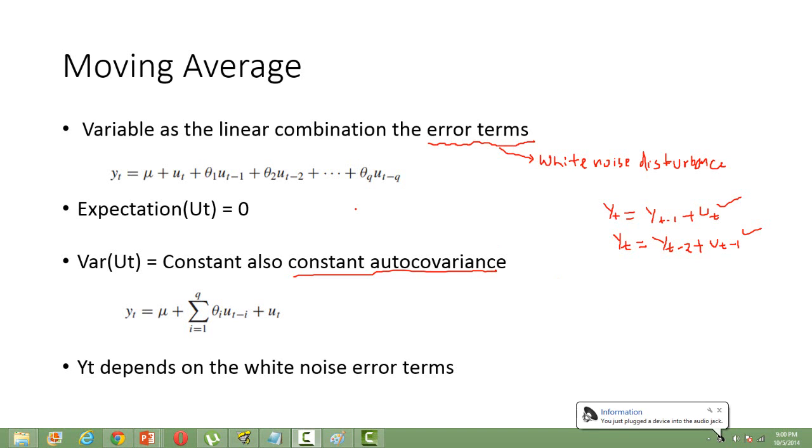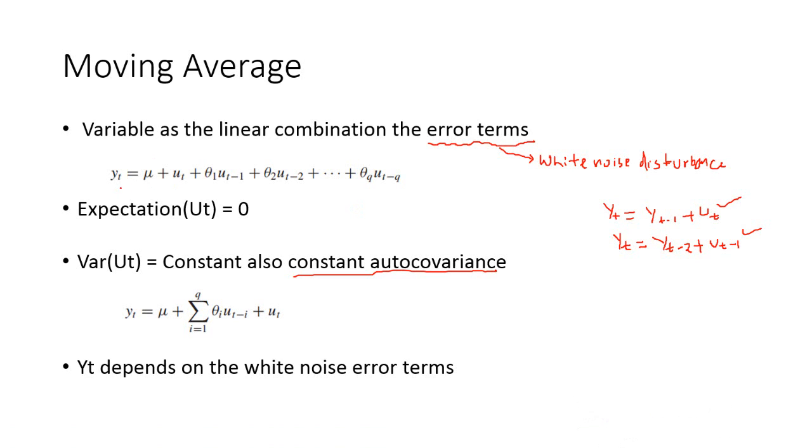The functional form of a moving average model looks like this. You can see on the screen. So, yt is the variable of interest. It is a linear combination of the residuals or the error terms.